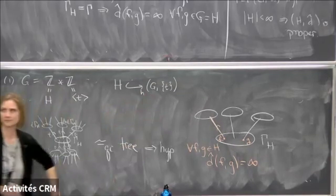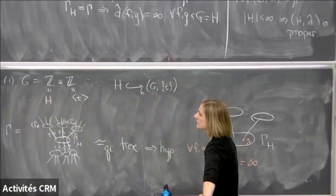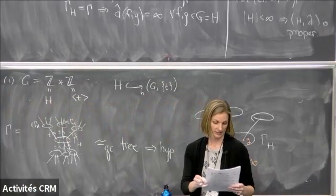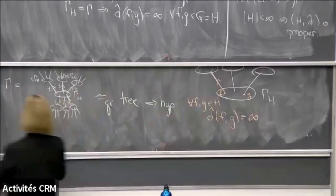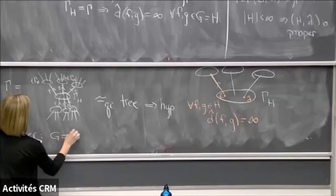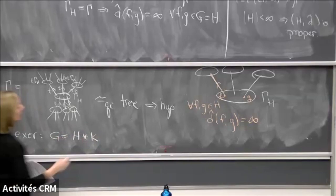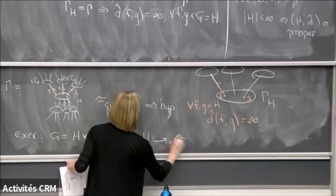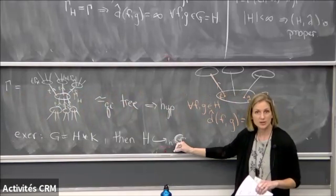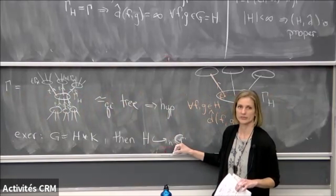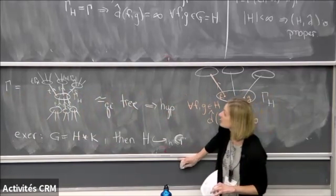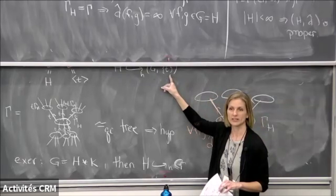Note that nothing specific about H being Z was used. In fact, this is an exercise for the problem session: if G is a free product of H and K for any groups H and K, then H hyperbolically embeds in G with respect to some relative generating set S — the exercise is to find the appropriate S.